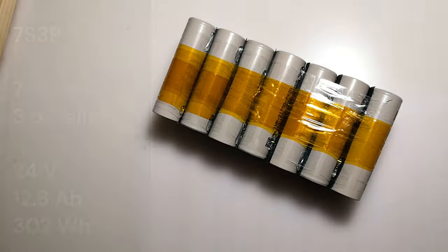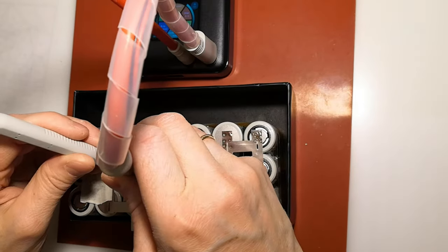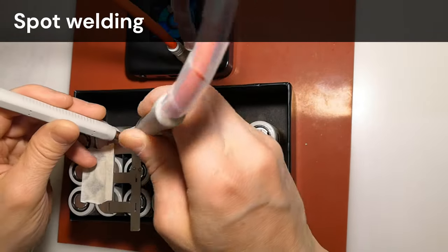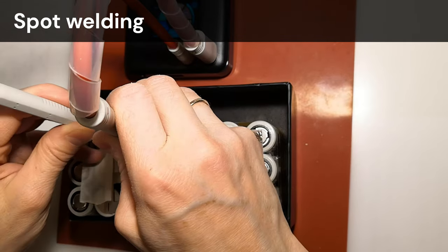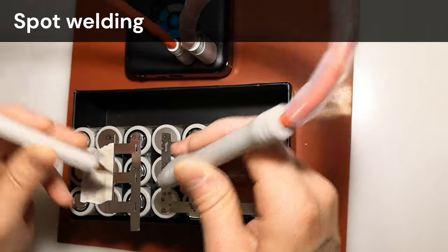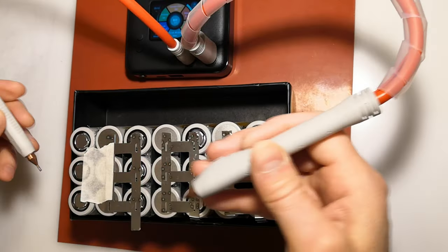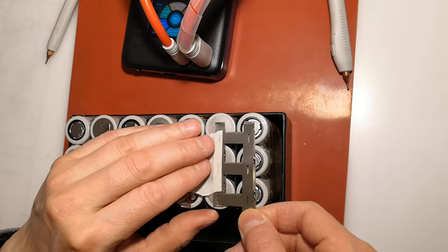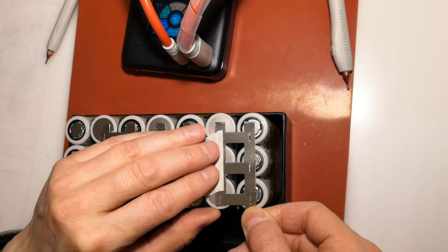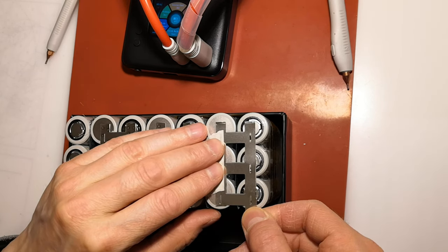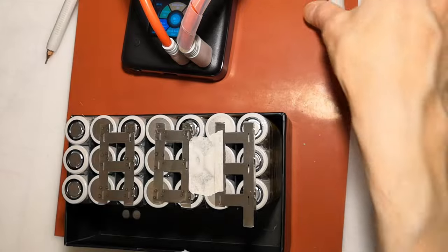The next step is spot welding. I'll use 0.15mm nickel strips. They could have been slightly larger, I ordered them for 18,650 cells, but my cells are larger. However, it should work with these. I'll need to layer a second strip because this spot welder can't handle thicker ones, and I require more current.